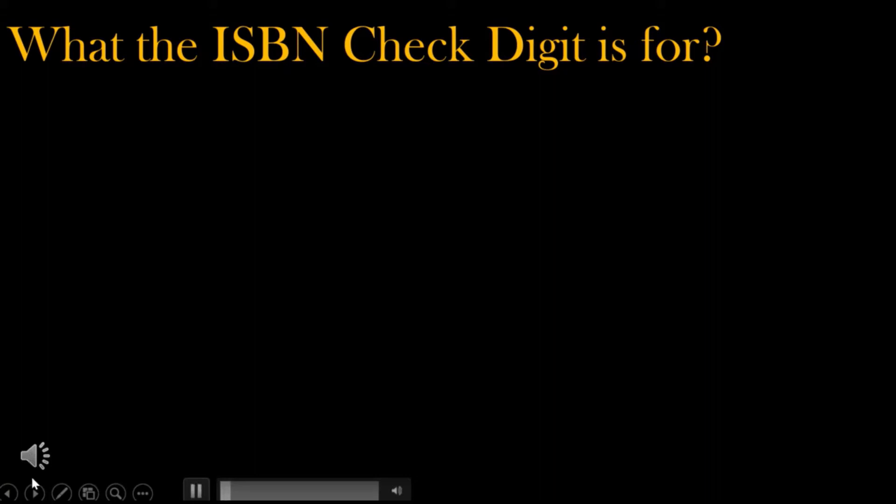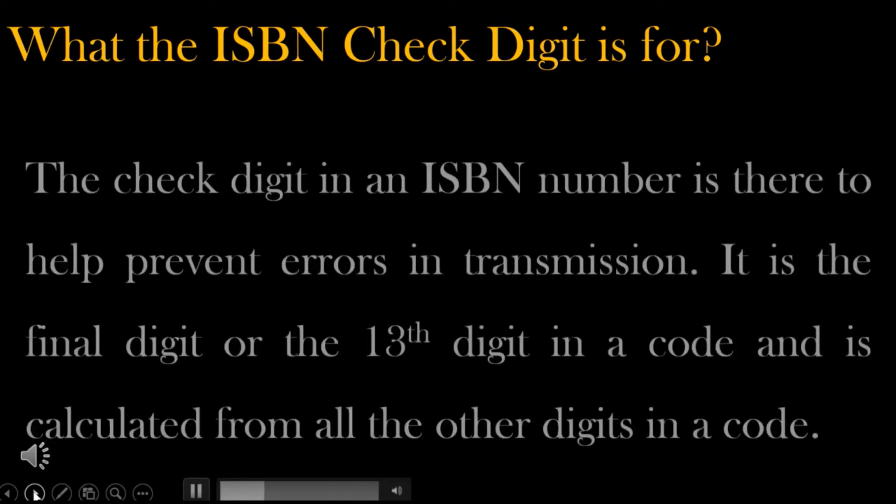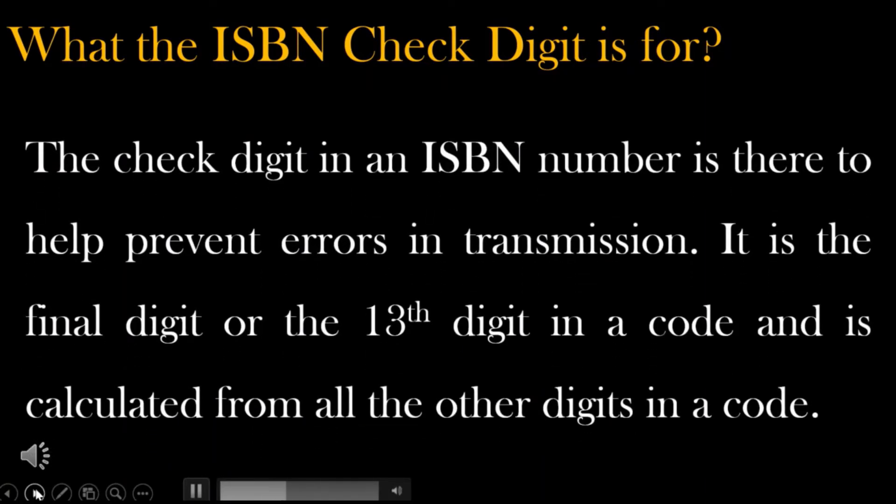What the ISBN check digit is for? The check digit in an ISBN number is there to help prevent errors in transmission. It is the final digit or the 13th digit in a code and is calculated from all the other digits in a code.